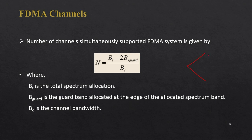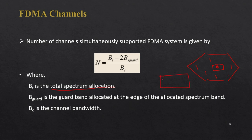Now let's discuss how many users can be supported in one cell with FDMA. The number of channels an FDMA system can simultaneously support is given by: N = (B_T − 2B_guard) / B_c, where B_T is the total spectrum allocation at the base station, B_guard is the guard band at the edge of the allocated spectrum, and B_c is the channel bandwidth.